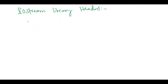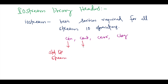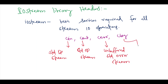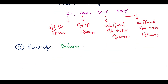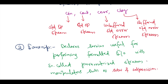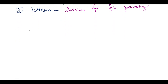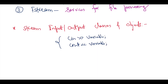Now let's discuss some iostream library headers. The iostream header declares basic services required for all stream IO operations — it defines cin, cout, cerr, and clog objects. cin is the standard input stream, cout is the standard output stream, cerr is the unbuffered standard error stream, and clog is the buffered standard error stream. The iomanip header declares services for performing formatted IO with parameterized stream manipulators such as setw and setprecision. The fstream header declares services for file processing.